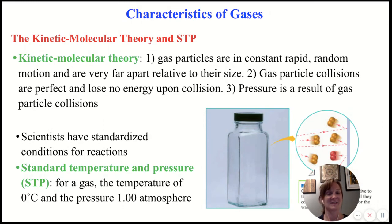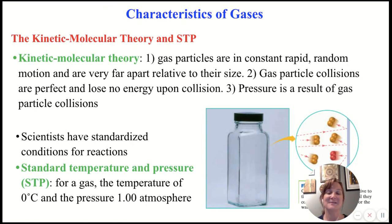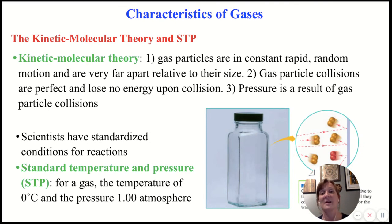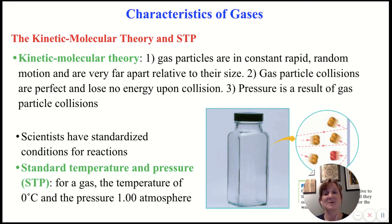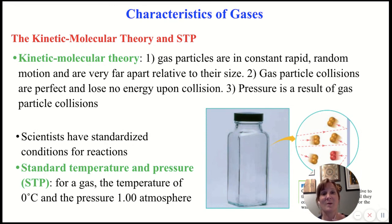In order to predict the behavior of gases mathematically, gases have to abide by the rules of the kinetic molecular theory. Only ideal gases abide by these rules — and the vast majority of gases are not ideal gases, they're real gases. Real gases are not necessarily in constant random motion, may not be far apart relative to their size, and there might be some energy transfer when they collide. So how can we make any predictions about gas behavior mathematically if most gases don't abide by these rules?